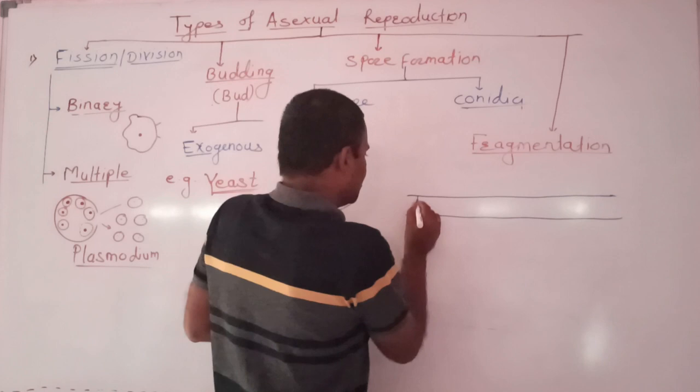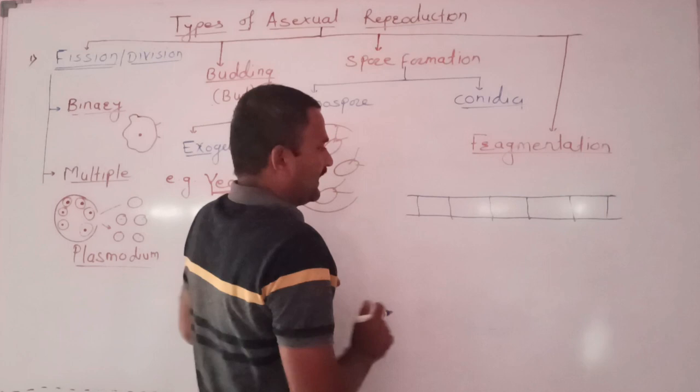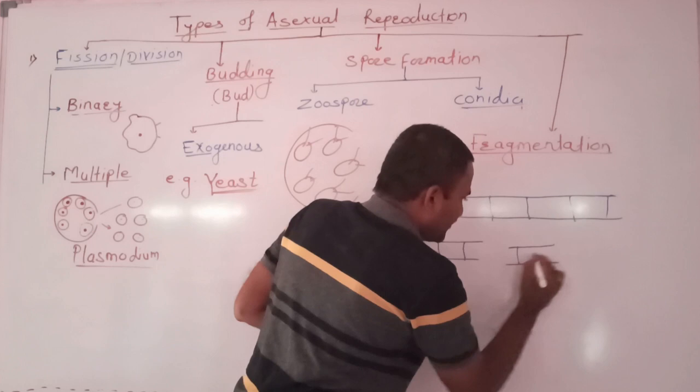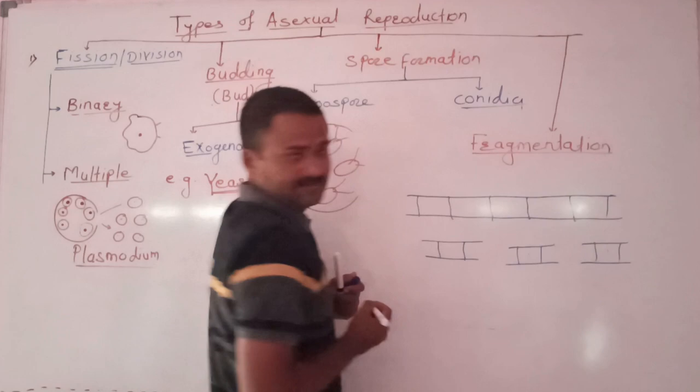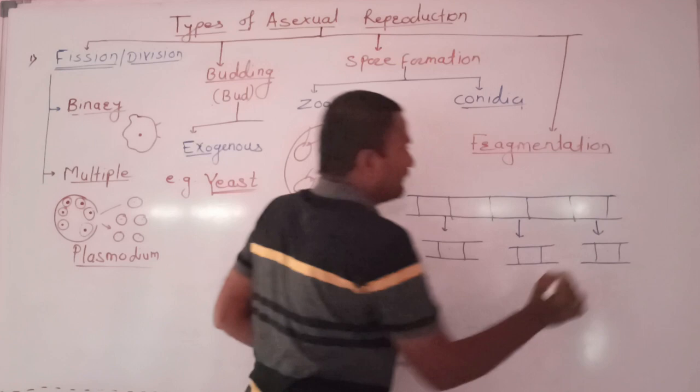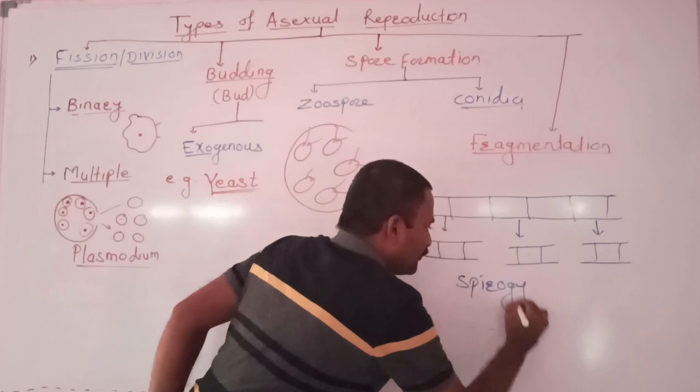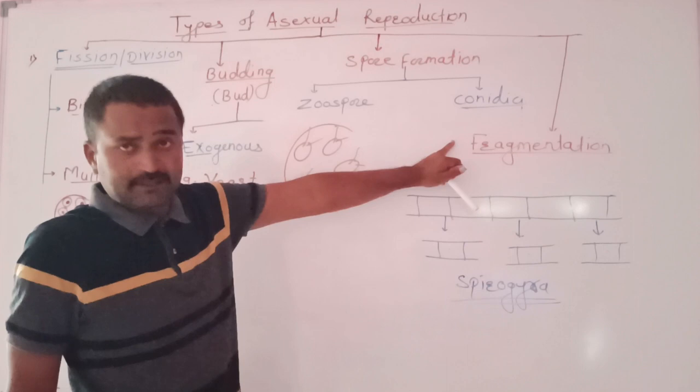Suppose this is the filament of spirogyra. This filament is multicellular, and then this filament breaks into many pieces. Each filament breaks into many pieces, and then each piece, each fragment, develops into a long filament of spirogyra. This is fragmentation.